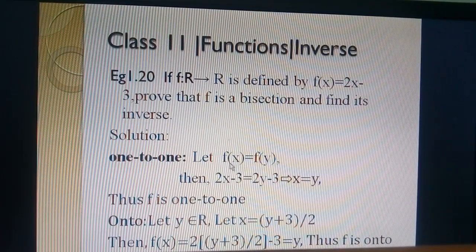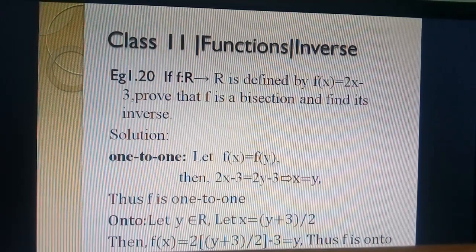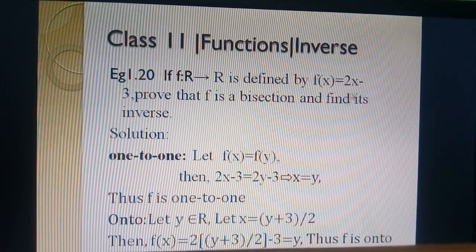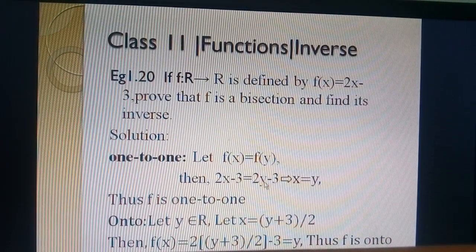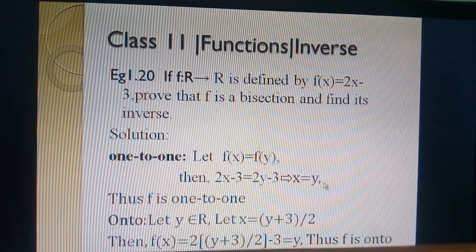First, we prove one-to-one. Let f(x) = f(y). f(x) is given 2x - 3. For getting f(y), simply we replace x by y. We get 2y - 3 for f(y). Solving, we get x = y.